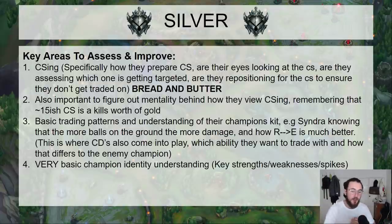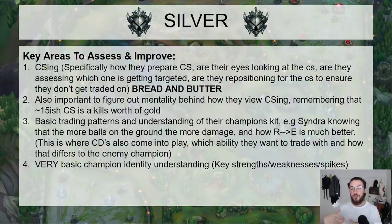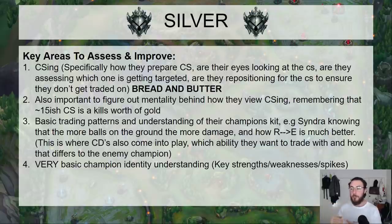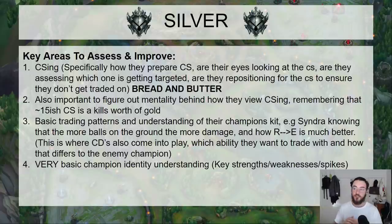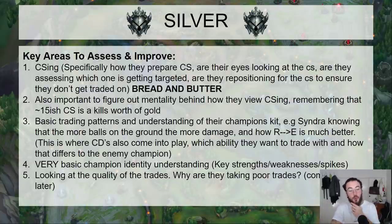Very basic champion identity — what are the key strengths, weaknesses, and power spikes? If you're playing Orianna, your key strength is long range — you can slowly poke them down. But your weakness is that you're very immobile and vulnerable, so if someone gets onto you, it's hard to escape. You've got to abuse that range advantage. You'd be surprised: people walk up into auto-attack range as Orianna doing things that don't make sense for that champion's identity. Are you an early-spiking champion or late-game spiking? That will dictate roughly how you want to navigate the game. And then look at the quality of trades — why are they taking poor trades?